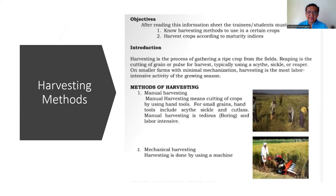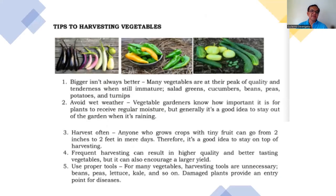Manual harvesting means cutting crops using hand tools such as the itak and sickle — it is tedious, sometimes boring, and labor-intensive. Mechanical harvesting is done using a machine. A harvesting tip: bigger isn't always better — many vegetables are at their peak quality when still immature.